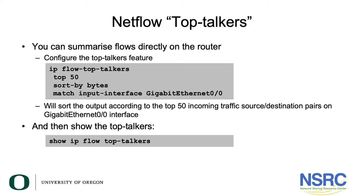The result will sort the output according to the top 50 incoming traffic source-destination pairs on the GigabitEthernet 0/0 interface. To display the results, we run 'show ip flow top-talkers'.